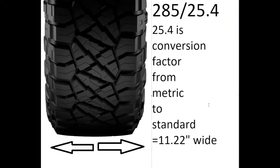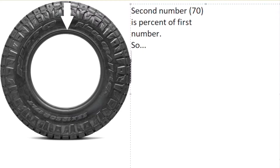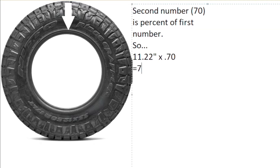Now we're going to use the second number. We take our width of 11.2 inches and multiply times .70, since the second number 70 means 70 percent. Now we know our sidewall height is 7.85 inches.